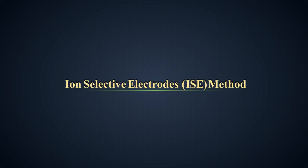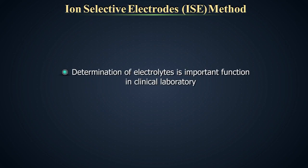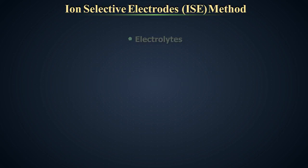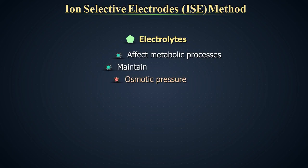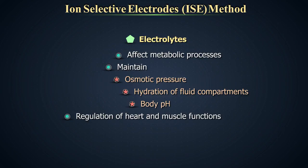Measurement of electrolytes by ion-selective electrodes method. The determination of electrolytes, sodium, potassium and chloride is one of the most important functions in a clinical laboratory. Electrolytes affect most metabolic processes. They serve to maintain osmotic pressure and hydration of various body fluid compartments, proper body pH and regulation of appropriate heart and muscle functions.